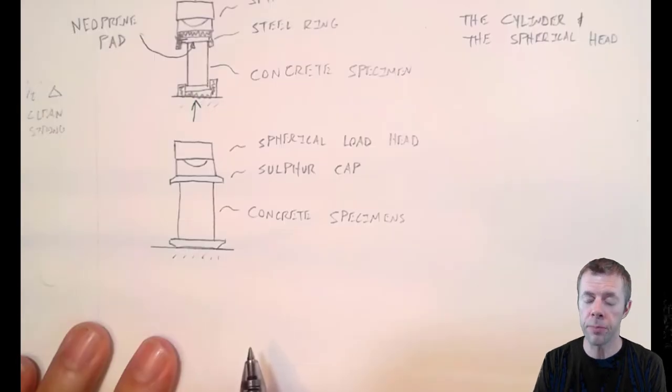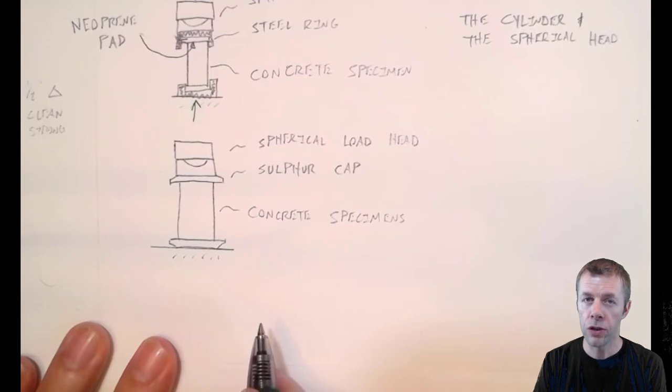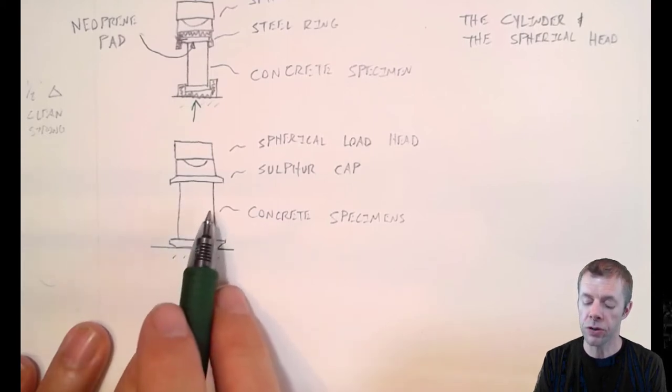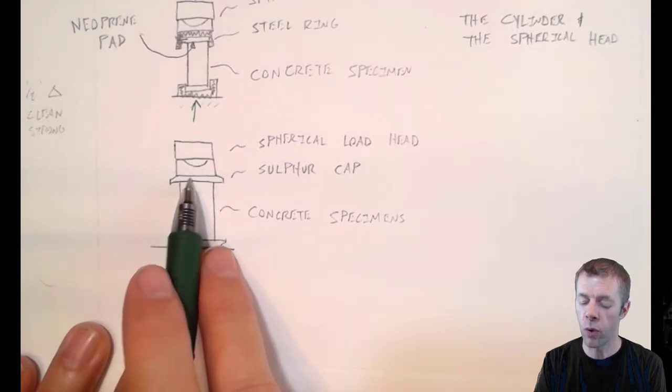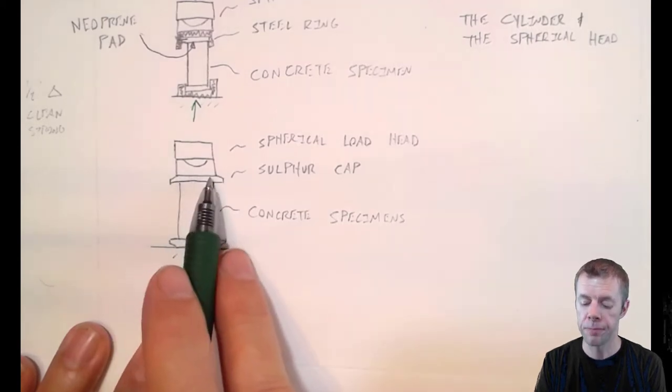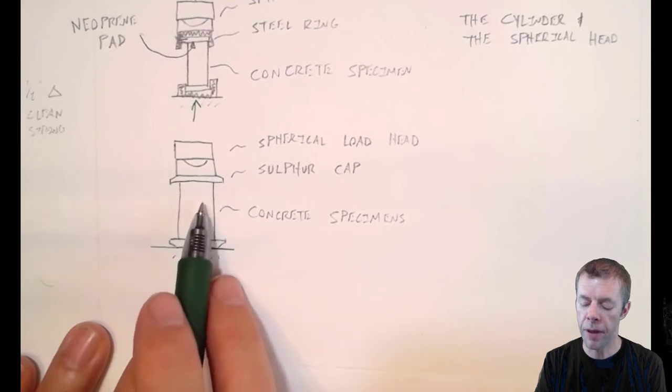We don't have to use neoprene pads, by the way. We can also use something called sulfur capping. The way sulfur capping works is you actually dip the concrete in molten sulfur to form a shape on the top and a shape on the bottom.